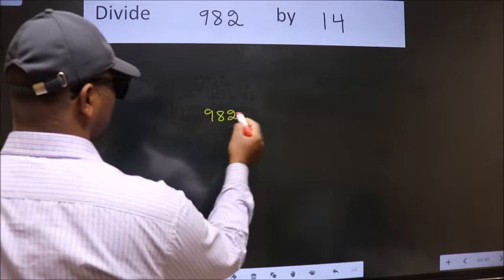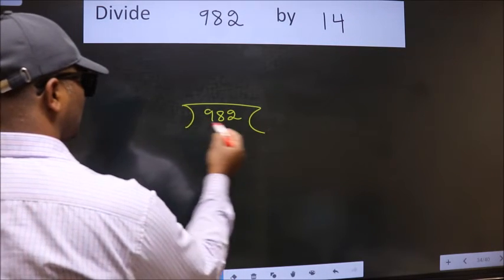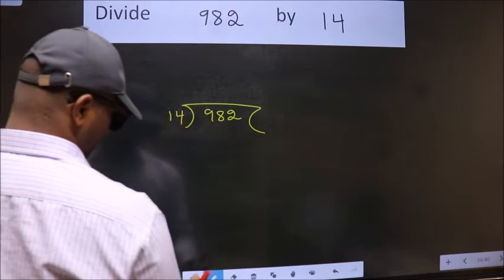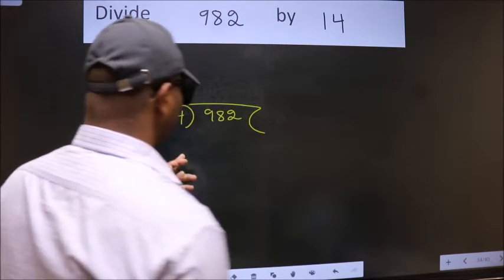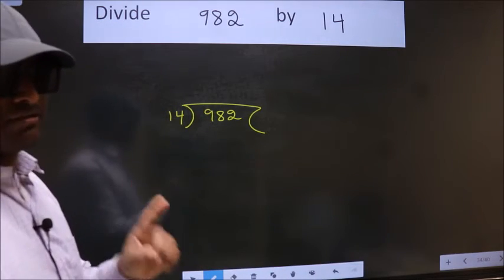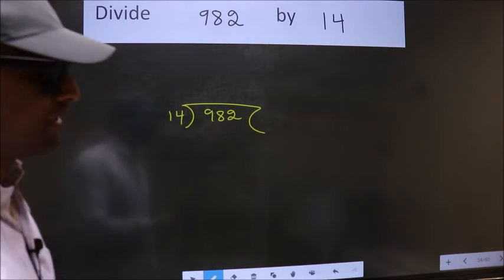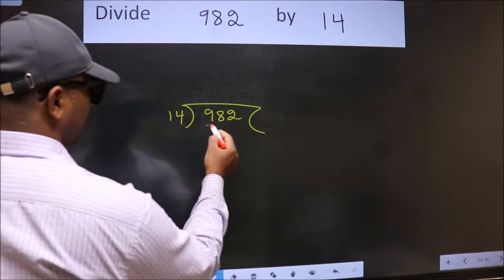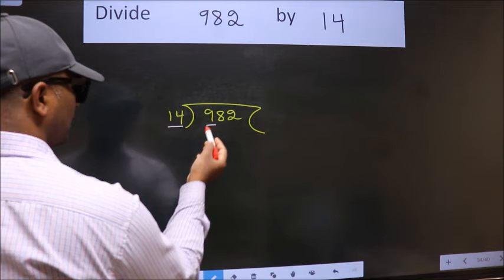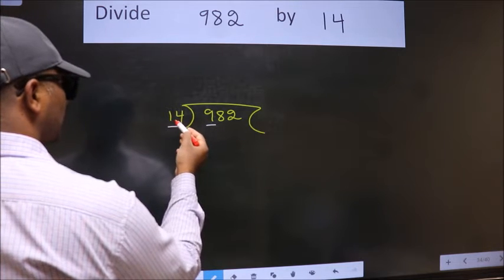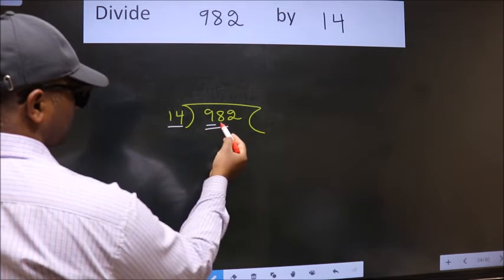982 here. 14 here. This is your step 1. Next, here we have 9. Here 14. 9 is smaller than 14. So we should take two numbers, 98.